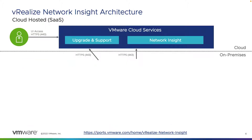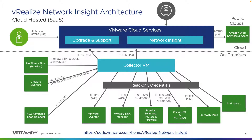Moving on to the actual SaaS offering — you'll hear this referred to as vRealize Network Insight Cloud or vRealize Network Insight Universal. Universal allows you to utilize the licensing to deploy either in the cloud or on-premises. vRealize Network Insight Cloud and vRealize Network Insight on-premises have separate licenses if you want to focus strictly on SaaS or on-premises. Universal is considered the flexible option. As you can see in this slide, the big difference is that the Network Insight platform and the upgrade and support are actually running within VMware Cloud Services.